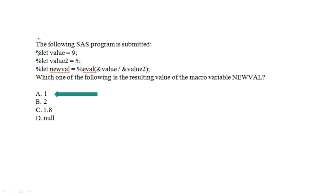The ninth question: if %let value1=9, %let value2=5, and you divide value1 by value2 using %eval, what is the result? The %EVAL function only deals with integer values, not decimal or floating-point values. So 9 divided by 5 using %EVAL gives only the integer result. If you use %SYSEVALF, it deals with floating-point values like 1.6, 1.7, 1.8, but %EVAL returns only the integer portion.